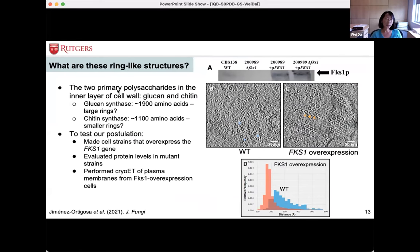So what are they? We know in the inner fungal cell wall layer, the two most abundant structures are chitin and glucan. Chitin synthase has a smaller molecular weight compared to glucan synthase. We also know glucan is more abundant than chitin. The most dominant structure in our tomograms are the large ring-like structures with a diameter of 170 angstroms. So we think, based on those observations, maybe the large ring is the glucan synthase and the smaller rings are probably chitin synthase.